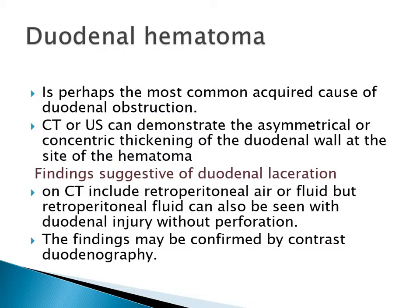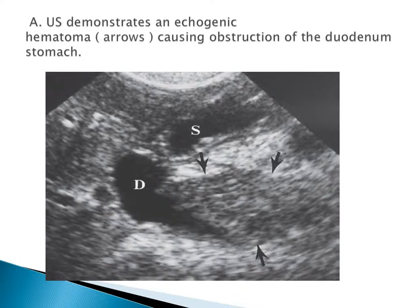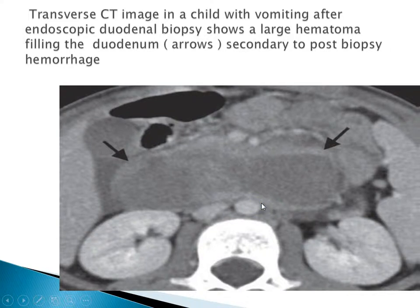Duodenal hematoma is perhaps the most common acquired cause of duodenal obstruction. CT or ultrasound can demonstrate asymmetrical or concentric thickening of the duodenal wall at the site of the hematoma. Findings suggesting duodenal laceration on CT include retroperitoneal air or fluid, though retroperitoneal fluid can also be seen with duodenal injury without perforation. This CT scan shows a large hematoma filling the duodenum secondary to post-biopsy hemorrhage following endoscopic duodenal biopsy.